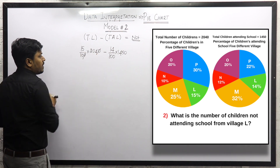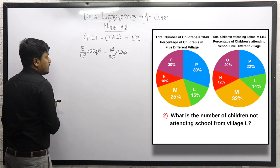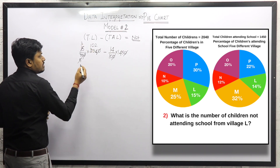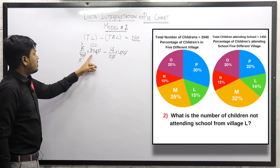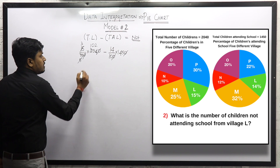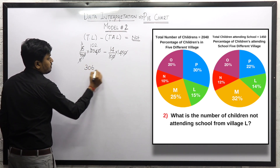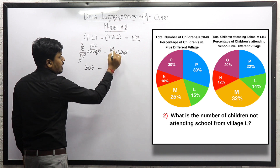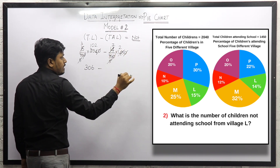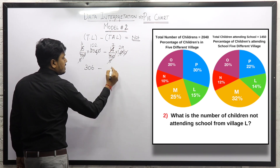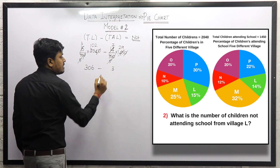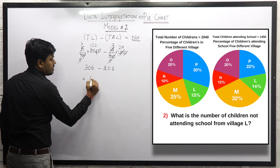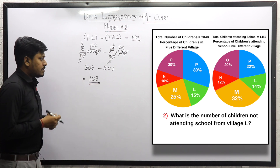Cancelling zeros and simplifying: 15/100 × 2040 minus 14/100 × 1450. After cancellations — dividing by 100, then by 2, then by 5 — we get 306 minus 203. The final answer for question number 2 is 103, which is the total number of children not attending school from village L.